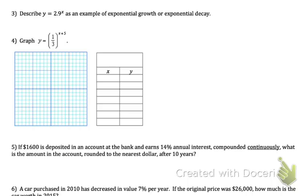Number 3 wants us to describe the equation Y equals 2.9 to the X as exponential growth or decay. In this case, any time that this base number is bigger than 1, it's going to be a growth. Any time it's between 0 and 1, it will be a decay. So your answer here is growth.